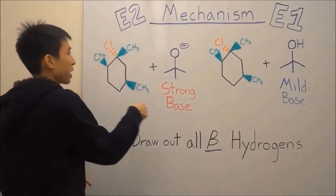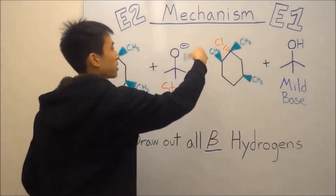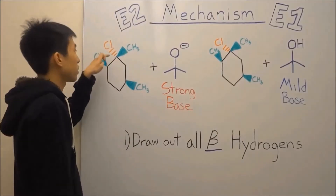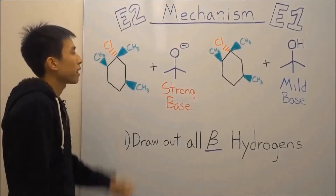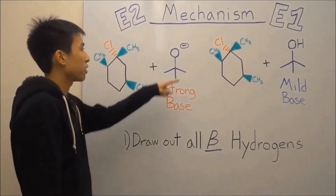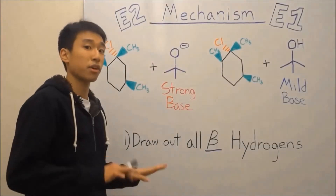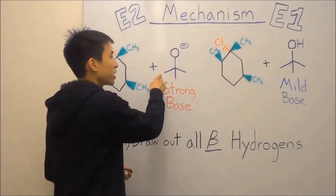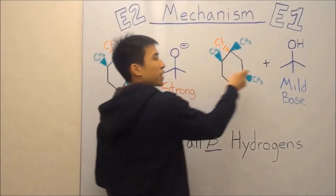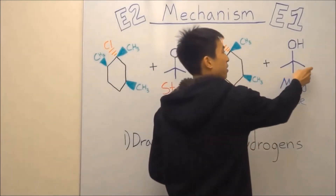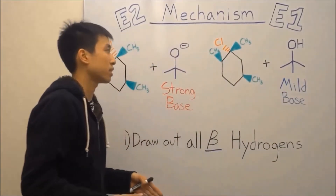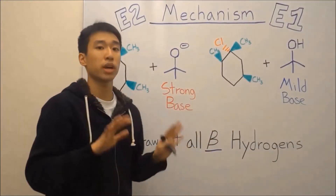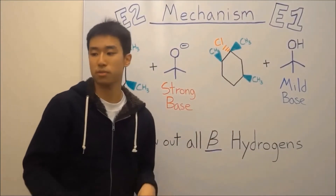Over here we have our E2 substrate and our E1 substrate. They're exactly the same — it's a tertiary carbon with your leaving group chlorine. And then we have our nucleophiles that are actually very, very bad at being nucleophiles, because they're chunky and hindered due to these methyl groups that are slowing it down and preventing it from getting through to your carbon. So we're not going to be doing a substitution reaction.